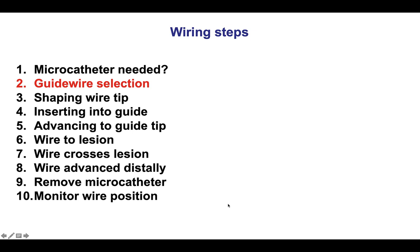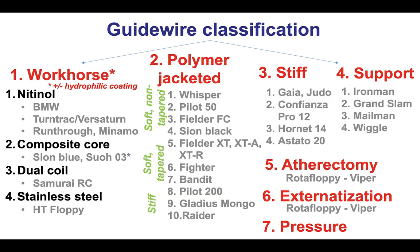Moving to step number two, which is selecting a guide wire. There are seven guide wire categories. Number one are the workhorse wires, which are used in the vast majority of cases. There are varieties of those wires — they can be nitinol, composite core, dual coil, or stainless steel. Some do and some do not have a hydrophilic coating. These wires will be used in the vast majority of percutaneous coronary interventions.